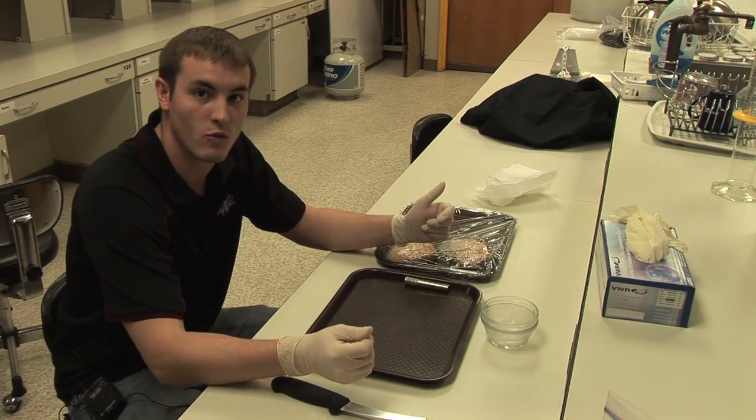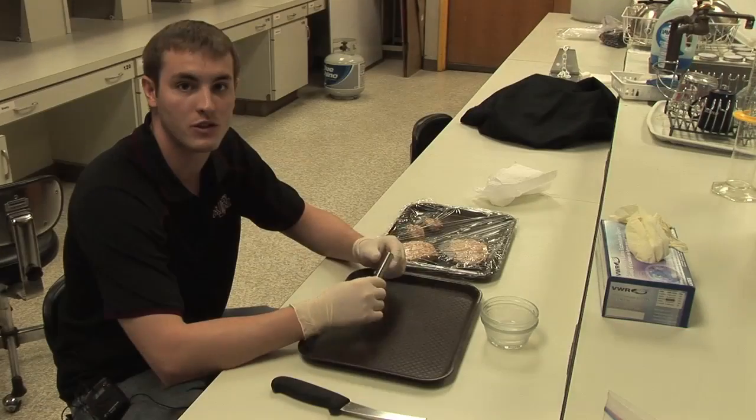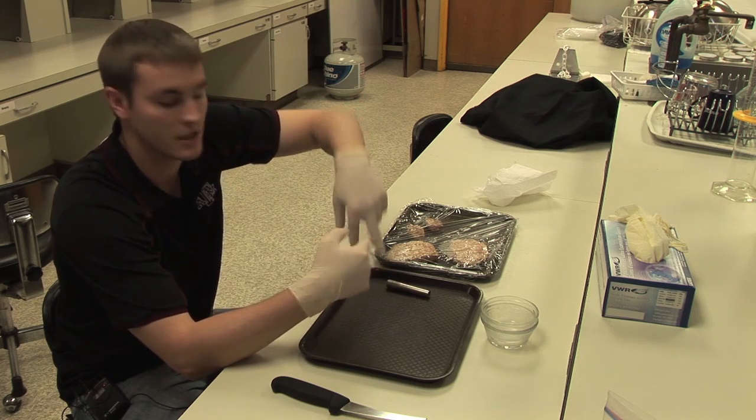When testing for Warner Bratzler Shear Force, we actually use this to core the meat samples. The cores from this are what's used to put inside the machine and used to test how tough the meat is.